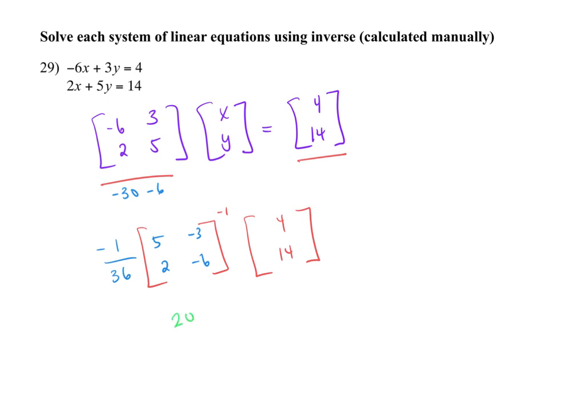So if I were to do it, I would have 5 times 4 plus negative 3 times 14. And then I would have 2 times 4, negative 6 times 14, and then add those up. So I have negative 22, negative 76. And then I would have negative 36, and then I would have negative 36, and then reduce it.